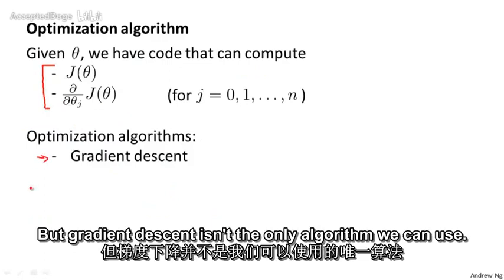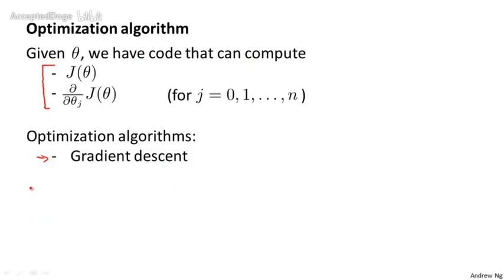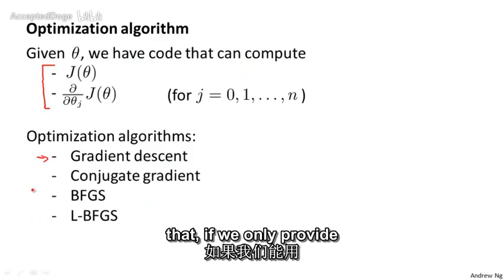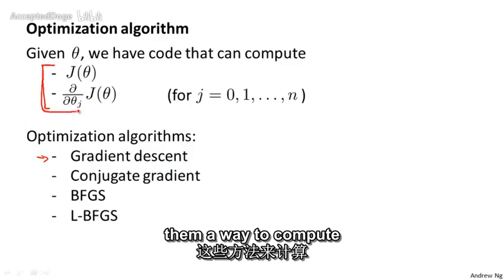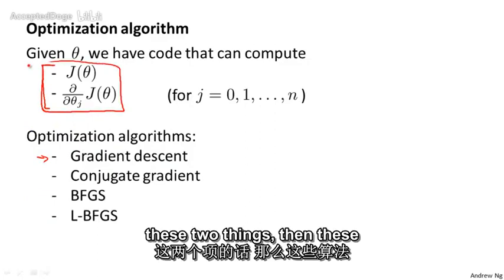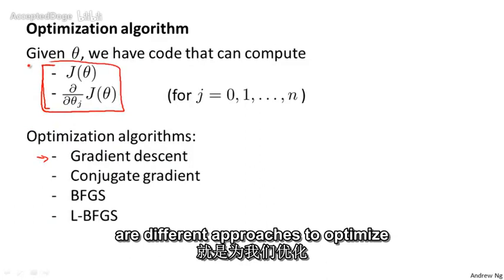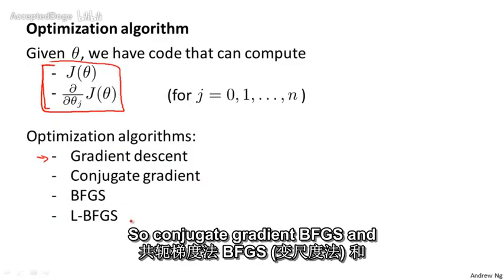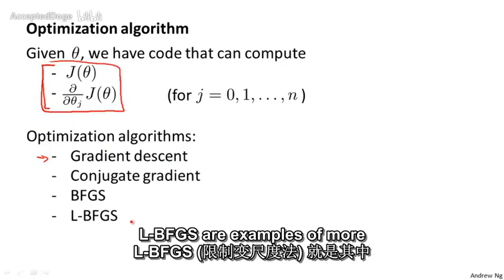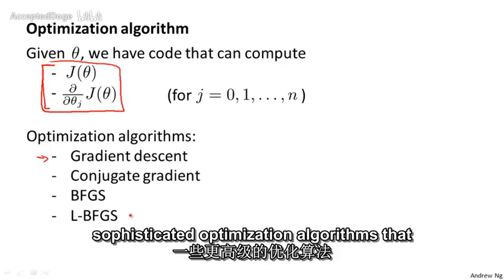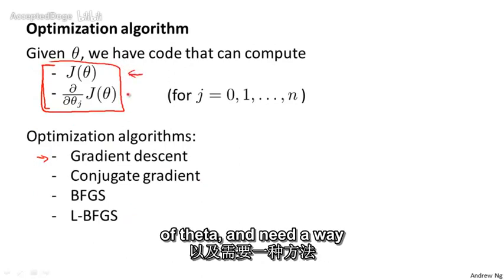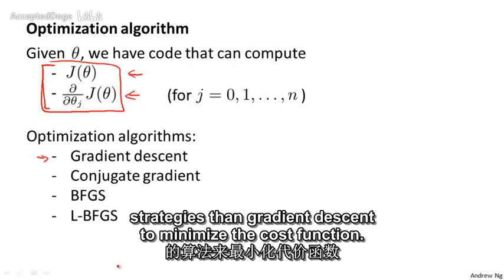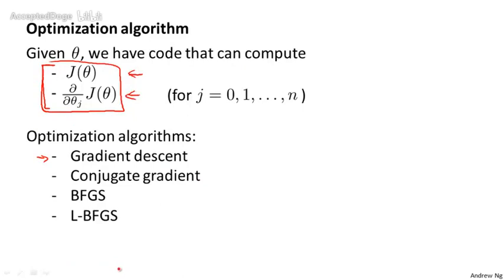But gradient descent isn't the only algorithm we can use. There are other algorithms — more advanced, more sophisticated ones — that if we only provide them a way to compute J of theta and its derivatives, these are different approaches to optimize the cost function for us. Conjugate gradient, BFGS, and L-BFGS are examples of more sophisticated optimization algorithms that need a way to compute J of theta and its derivatives, and can then use more sophisticated strategies than gradient descent to minimize the cost function.